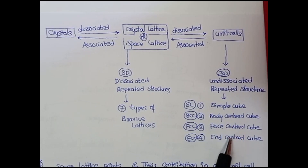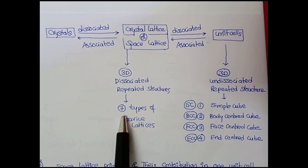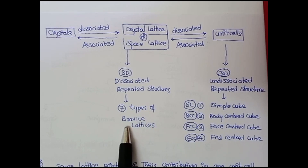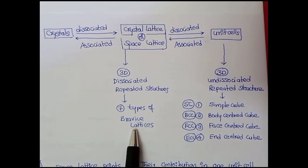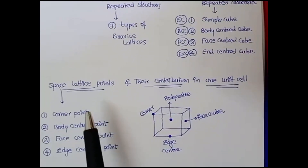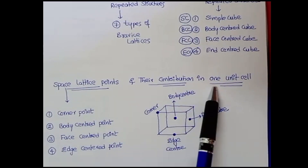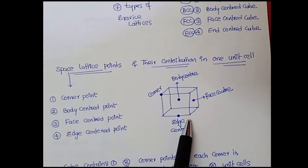The space lattice is classified into seven types with combinations of unit cells, introduced by scientist Bravais — hence called Bravais lattices. Before discussing unit cells, we must understand the important lattice points and their contributions in a unit cell. The important crystal structure is cubical. A cube has four important point types: corner point, body-centered point, face-centered point, and edge-centered point.